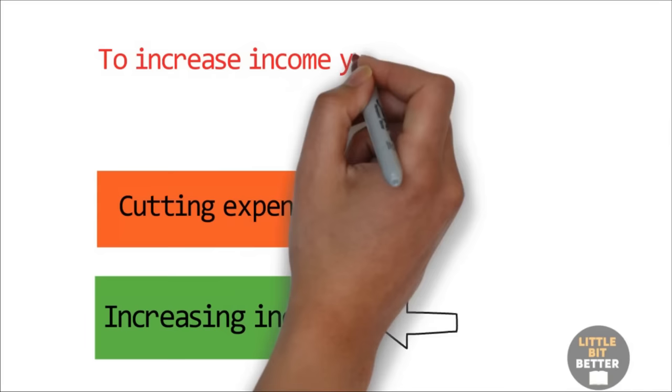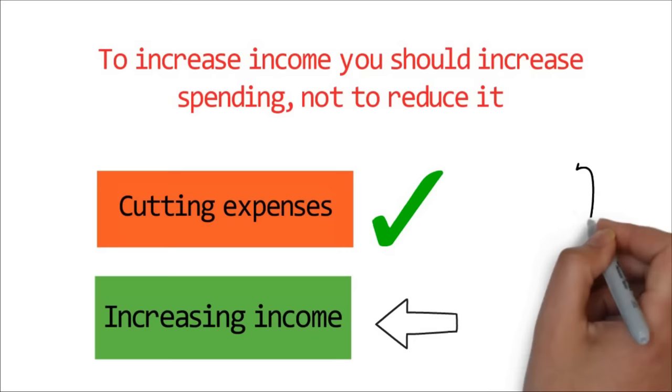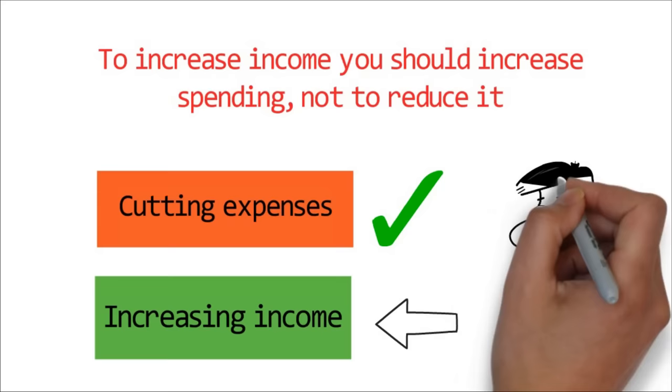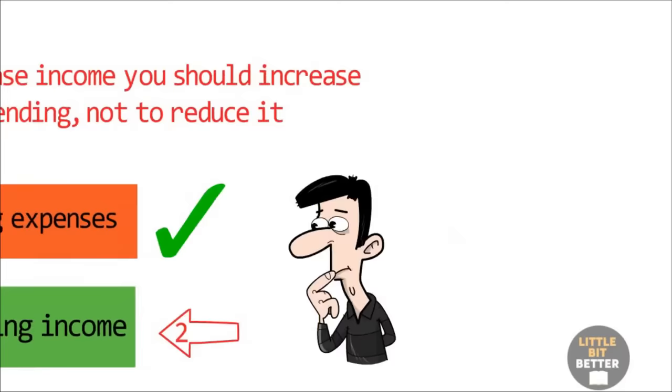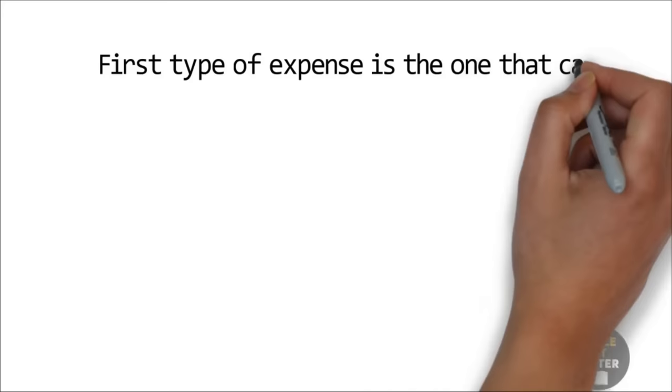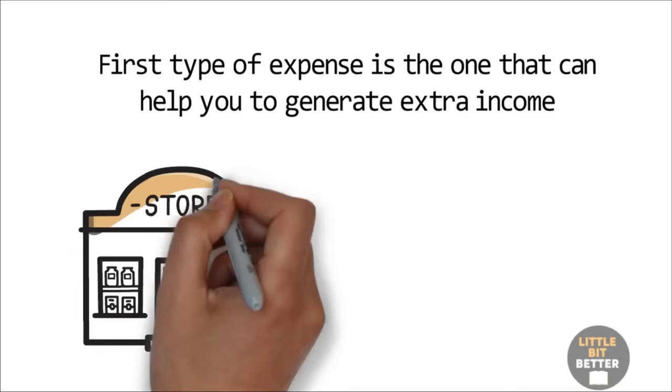I know what you are thinking right now. You are thinking, how is increasing expenses going to help me create a budget surplus when I am already in a deficit? Well, when Kiyosaki talks about increasing expenses, he talks about two types of expenses specifically. The first type of expense is the one that can help you to generate extra income. For example, if you have a store and are not selling enough products, then you should spend more on promotion and marketing, rather than cutting out marketing expenses.